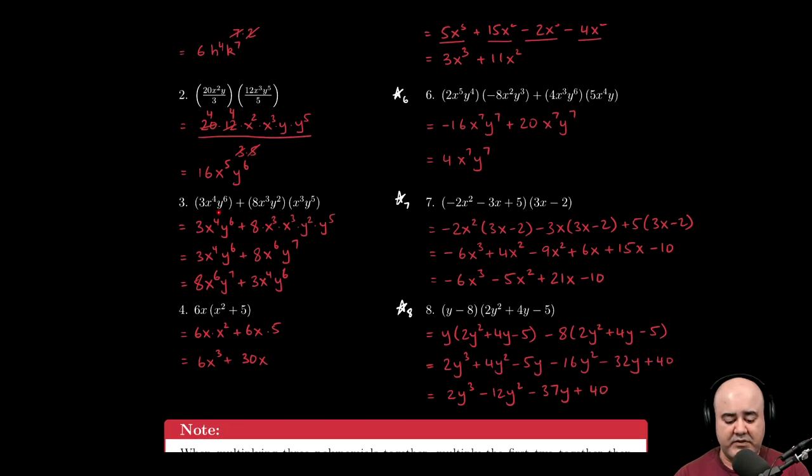Next, we have 3x to the 4th, y to the 6th, plus 8x cubed, y squared, times x cubed, y to the 5th. We do the exact same thing we've done in the past. We can rearrange these terms so that the x's go together and the y's go together. This is not really being multiplied by anything, so it just comes along for the ride. So we just copy down 3x to the 4th, y to the 6th, and we don't really do anything with it because it's not being multiplied by anything. These two terms are being multiplied, so we need to clean that up before we add them.